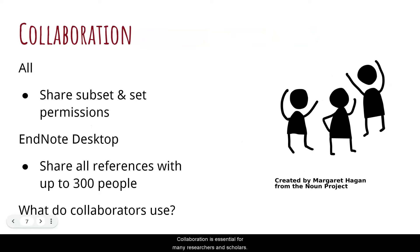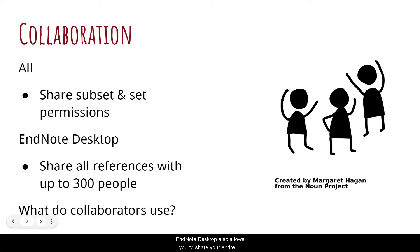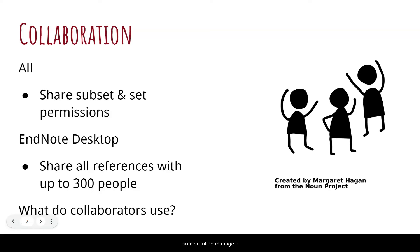Collaboration is essential for many researchers and scholars. Both EndNote and Zotero allow you to share a subset of your references with others and designate the level of access that they have. For EndNote Desktop, use EndNote Online to do that. EndNote Desktop also allows you to share your entire collection of references with up to 300 people. More importantly, what do the people you work with use? It's much easier to collaborate on articles when you use the same citation manager.